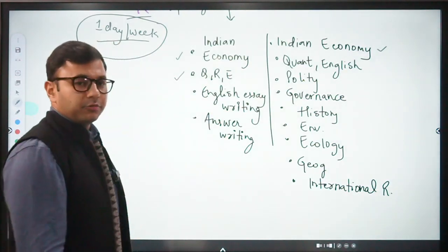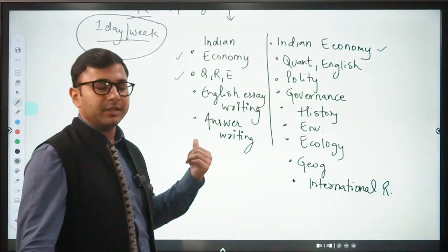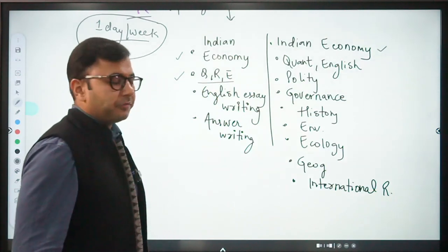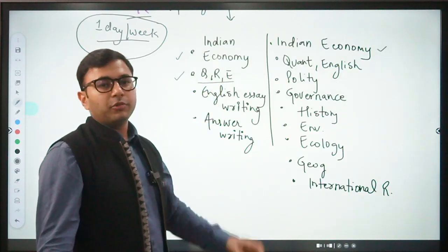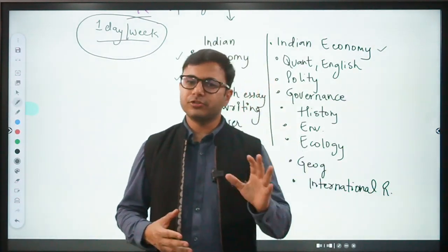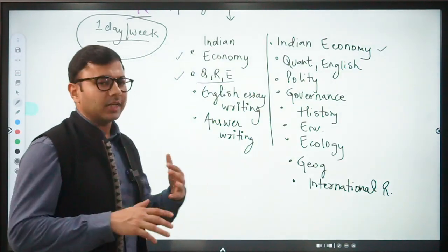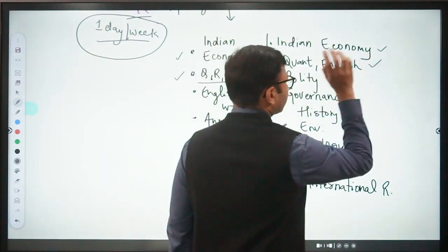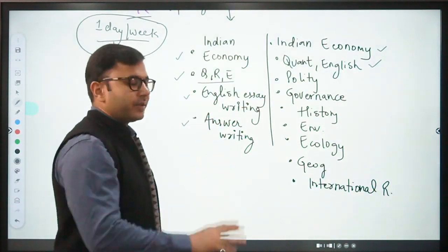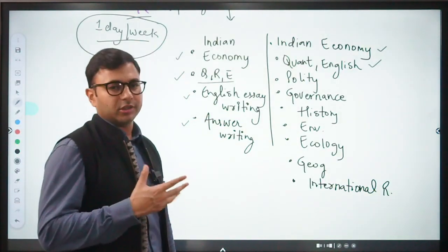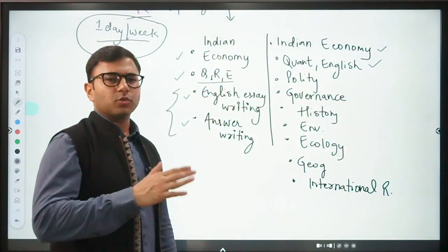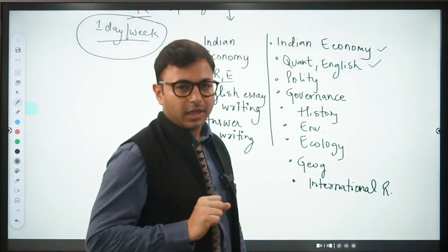Quant, Reasoning, and English - when you are preparing for UPSC, you have to prepare for CAT level examination because otherwise you might fail. A lot of students have been failing in Quant, Reasoning, and English because they feel that in UPSC it is qualifying, so it is easier. If you prepare intensely for Quant, Reasoning, and English for UPSC, automatically you will be prepared for RBI as well. English essay writing and answer writing you can pick up very easily through your UPSC prep with a lot of ideas and writing practice.